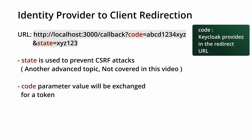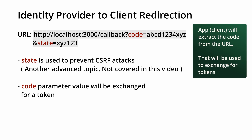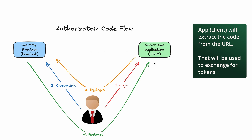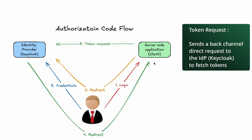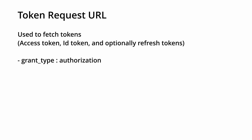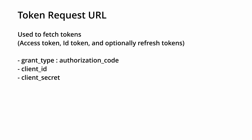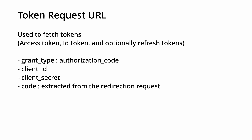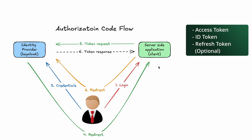This is the authorization code provided by the Keycloak server to the server-side application. Once this code is received, the server-side application extracts it from the URL and makes a direct request to the Keycloak identity provider. This request contains parameters such as grant type set to 'authorization_code', client ID, client secret to authenticate the server-side application, the captured authorization code, and the redirect URI.